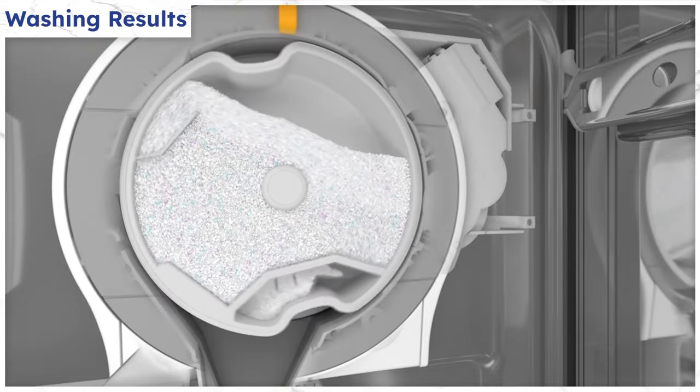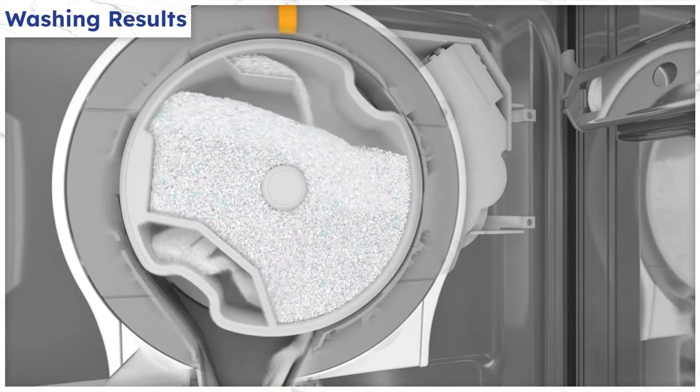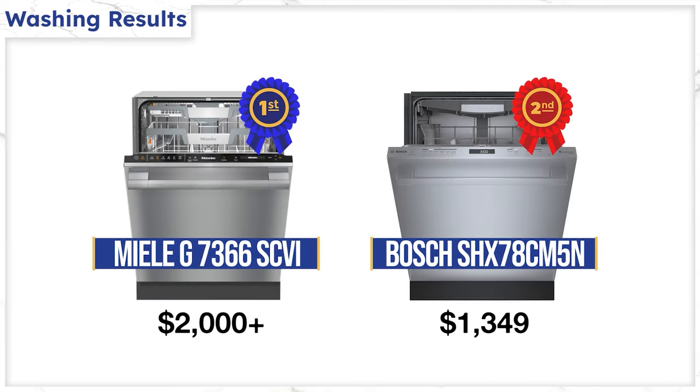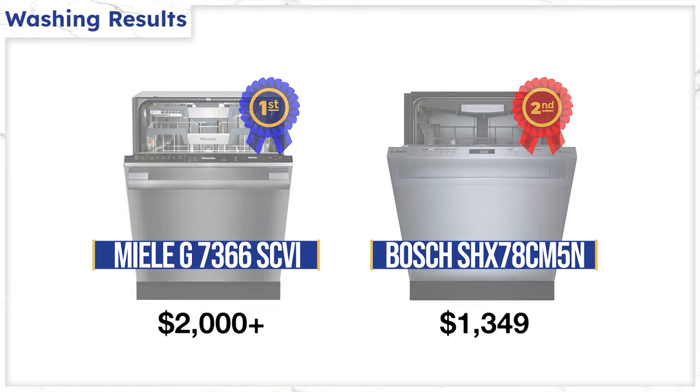Miele has the best washing system with three full spray arms and their unique auto dispenser. The Bosch came in second to Miele in our tests even with the power control spray arm. But then again the Miele does cost over $2,000 which is $700 more than the Bosch.